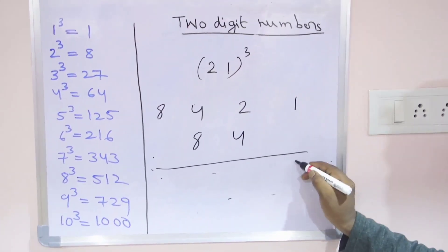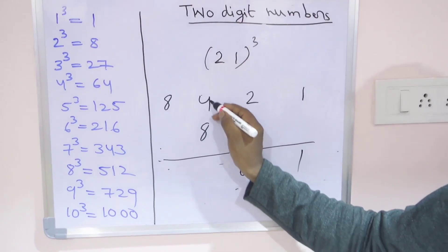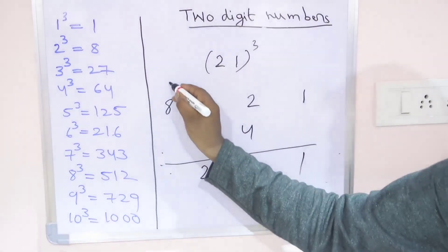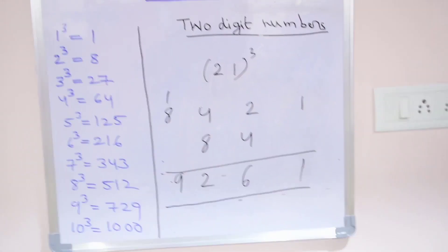4 double is 8, 2 double is 4. So 1, 4 plus 2 is 6. And 8 plus 4 is 12, which means 2 and 1 here is 9. So 9261 is the cube of 21.